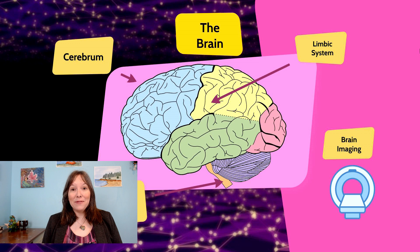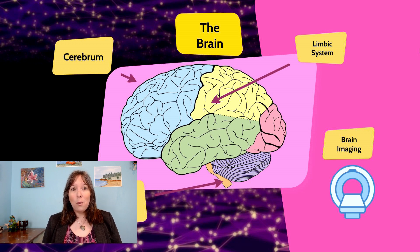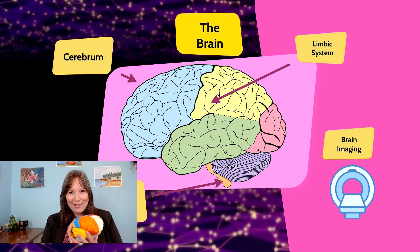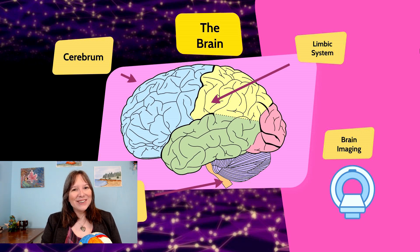Welcome back! Now that we've talked about neurons, glia, and neurotransmitters, it's time to talk about what happens when lots of neurons gather together and make the brain. So let's get to it.